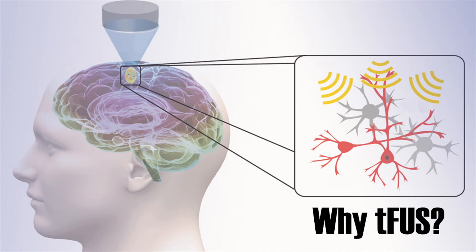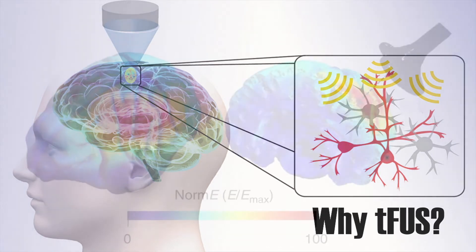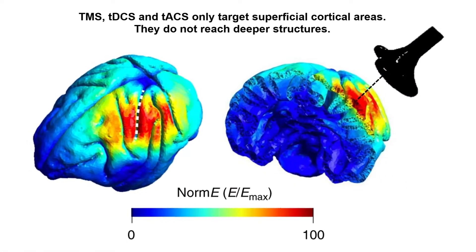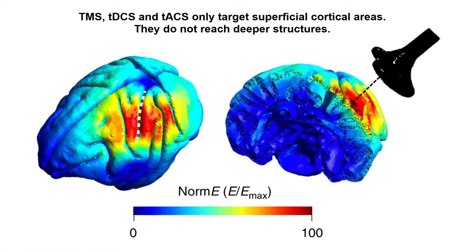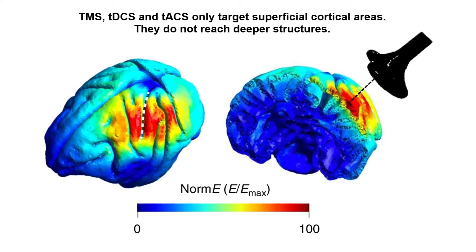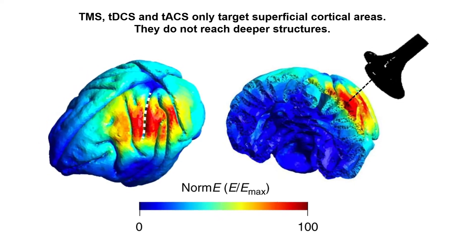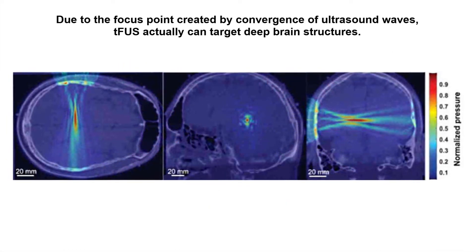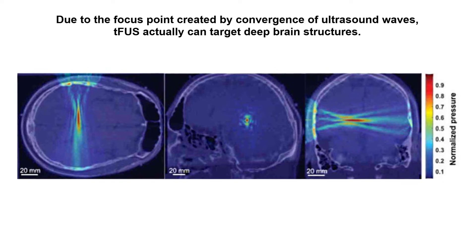Other brain stimulation techniques, like TMS and TDCS, have one thing in common, namely one major disadvantage. They can only target superficial brain areas directly. This means that deeper brain areas can only be stimulated indirectly at best. This disadvantage is not shared by TFUS, because the ultrasound waves can be focused to a specific point.